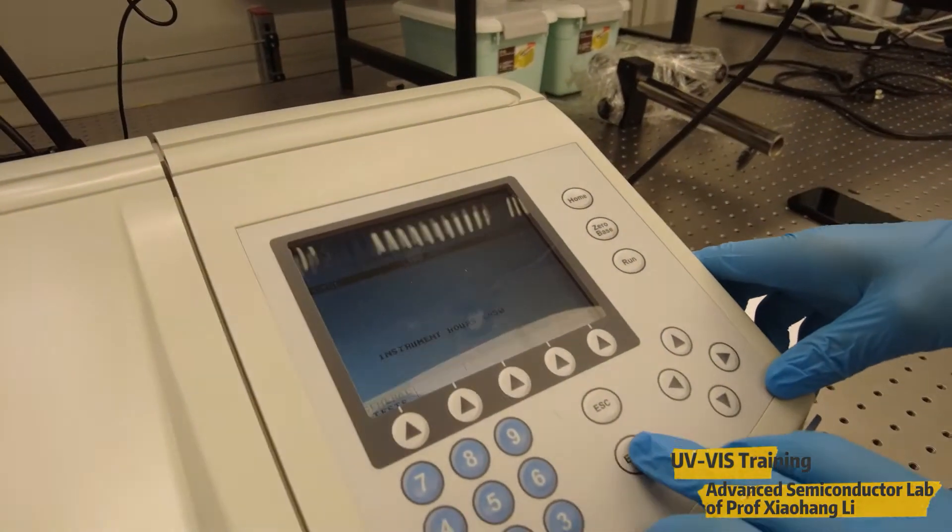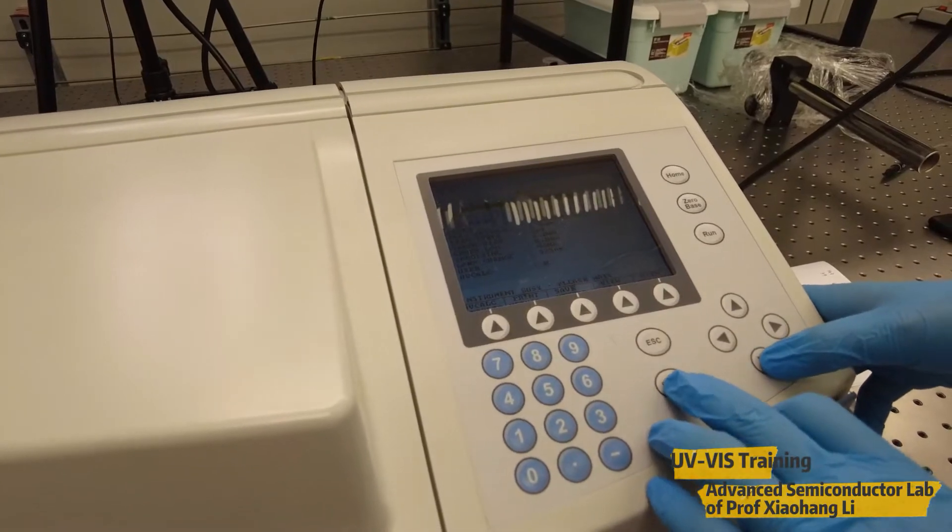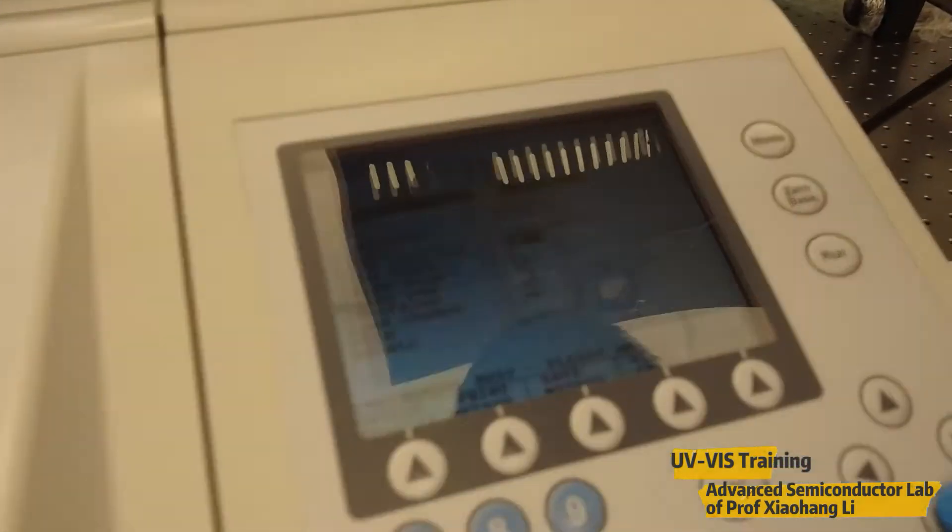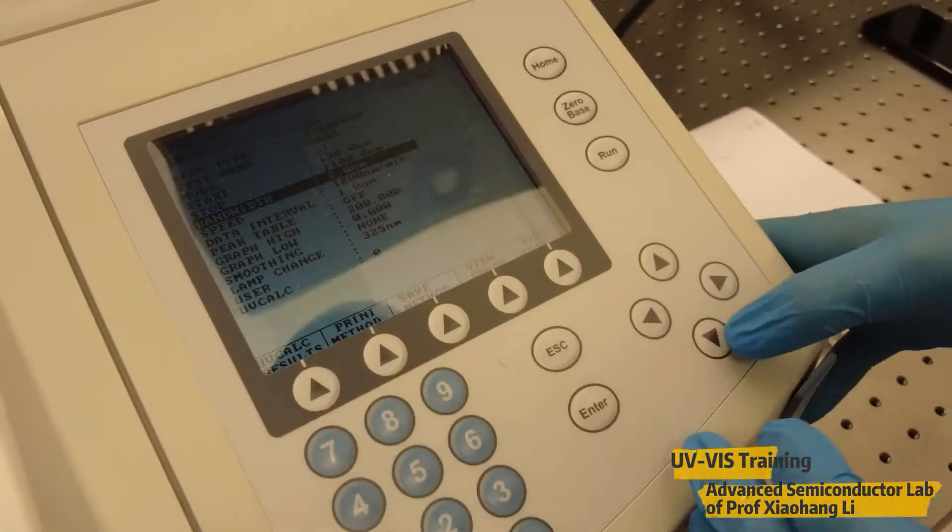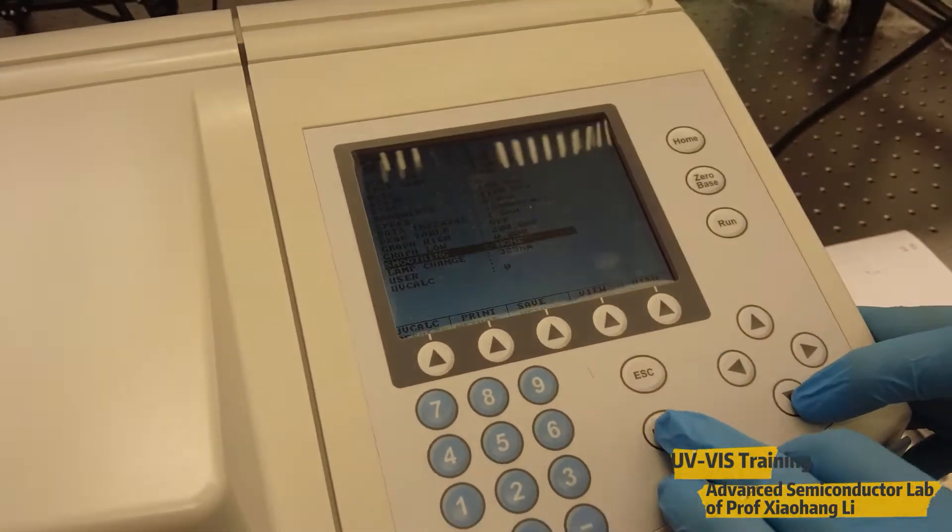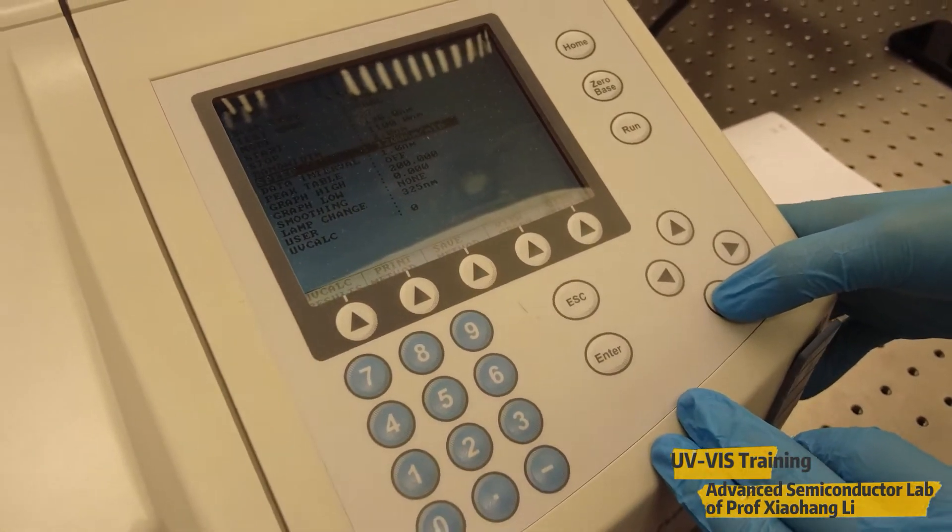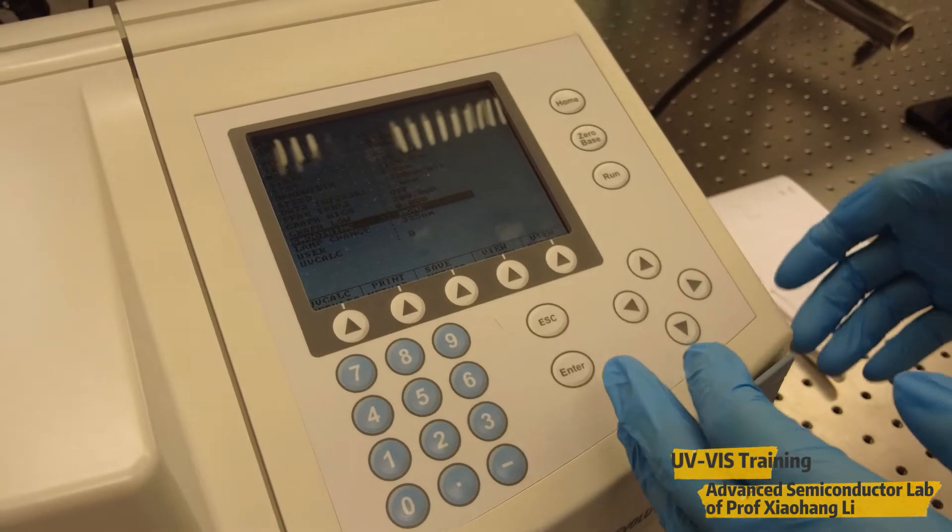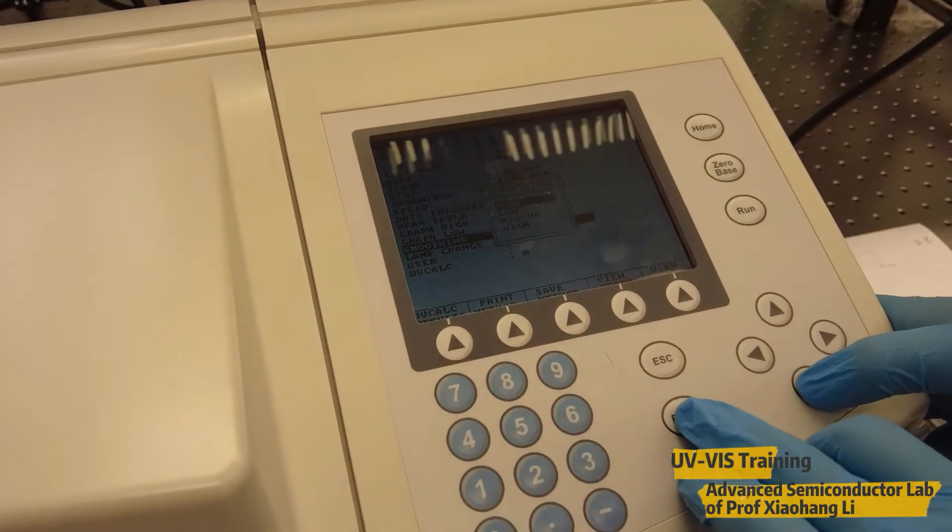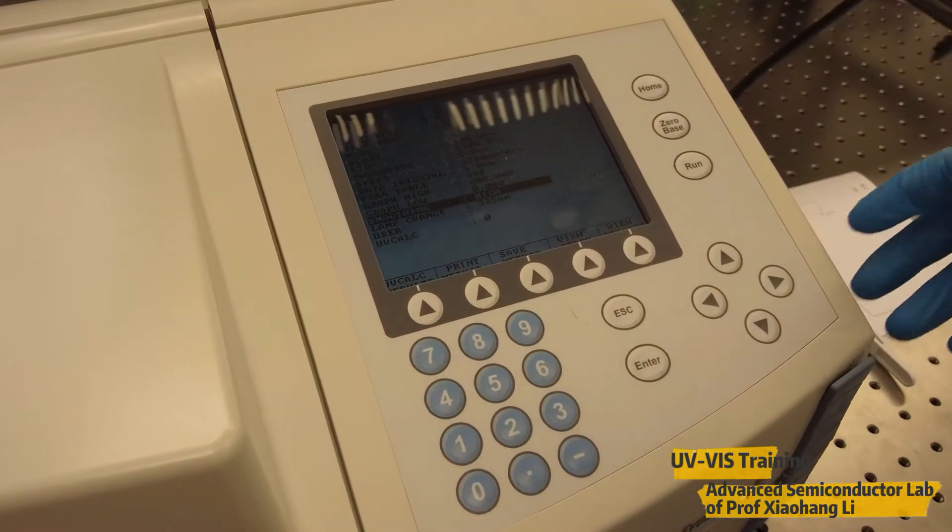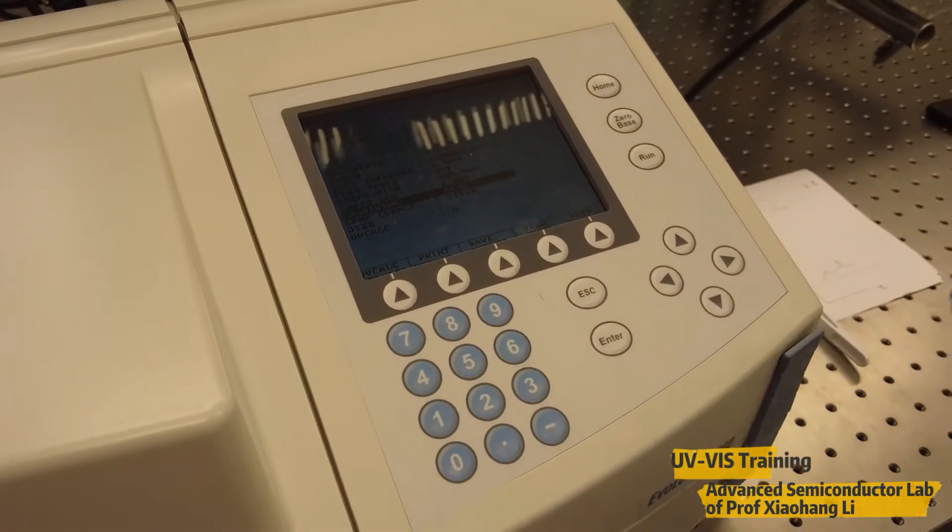By pressing enter we can start the experiment. In the mode we'll choose the transmittance and we can start from minimum 190 nanometer to the maximum 1100 nanometer. For the bandwidth we'll keep it as 2 nanometer and this is scan speed. We will make it as smooth as possible so we'll change the smoothing from low to high.